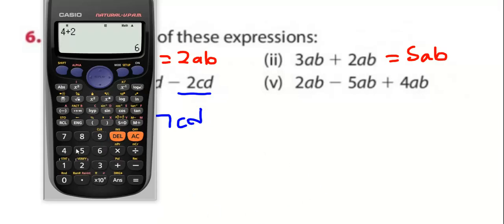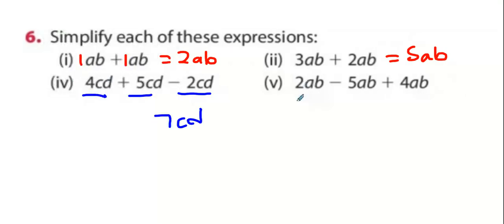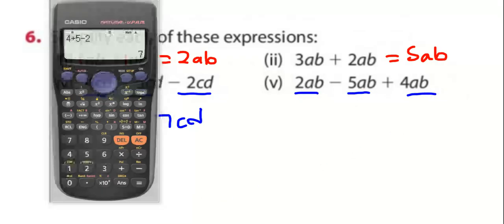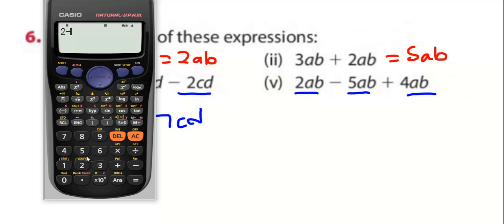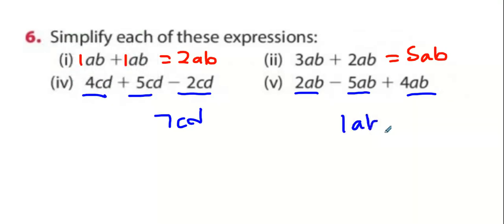If you want, you can put it into your calculator. Four plus five take away two. Ignore the CD's even exist. What about the next one? Two take away five plus four? One. Anybody happy enough with that?